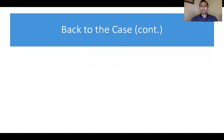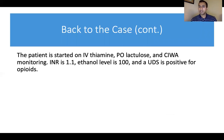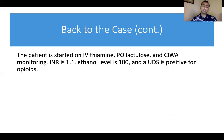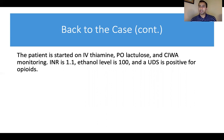Here is what I ordered — not because it's right or wrong, but because I, as the physician du jour, chose to order these things. I started the patient on IV thiamine and gave PO lactulose. Some people ask how you give lactulose to someone encephalopathic — if someone is not responsive, you can give rectal lactulose, but in this case the nurse was able to safely wake the patient and administer PO lactulose. I placed the patient on continuous monitoring and checked an INR, which was 1.1. I checked an ethanol level, which was 100 — right around the legal limit in most states.